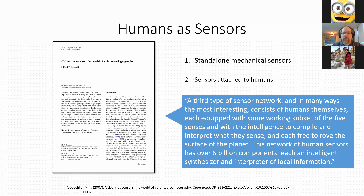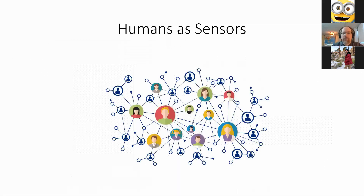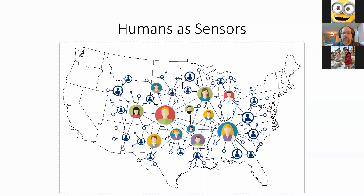My thesis takes this idea of humans as sensors and runs with it — taking a geographic approach to social network information to see what the sensors are actually measuring in both space and time. Humans are sensors measuring psychological states, social dynamics, the spread of ideas and language, movement across space and time, and opinions. Importantly, all of these can be placed on a map. There is a wide breadth of geographic information on social networks just waiting to be explored.